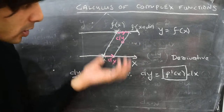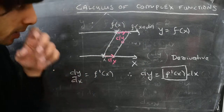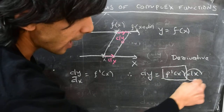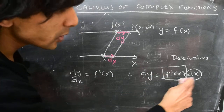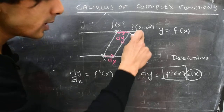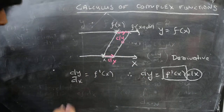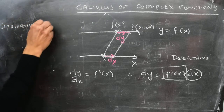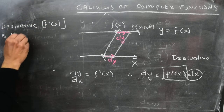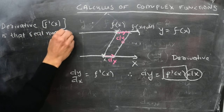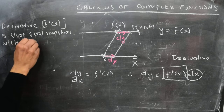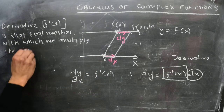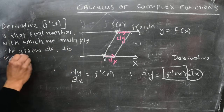Another way to think about the derivative, which becomes more evident in this plot, is that the derivative of a function of one real variable is that real number f'(x) with which we must multiply the arrow dx in order to get the image arrow dy on the image line.